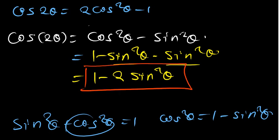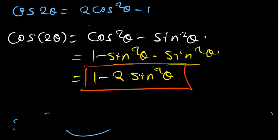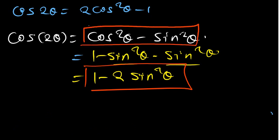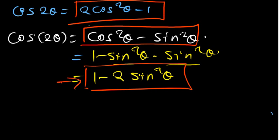So cos 2 theta has got three identities which you have to know: the first is cos squared theta minus sin squared theta, the second is 2 cos squared theta minus 1, and the third is 1 minus 2 sin squared theta. From the second and third ones, we can come up with more identities.